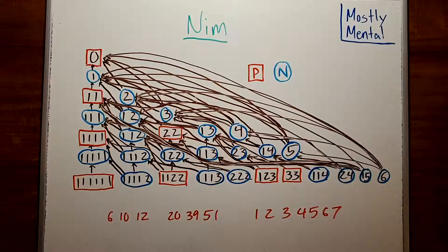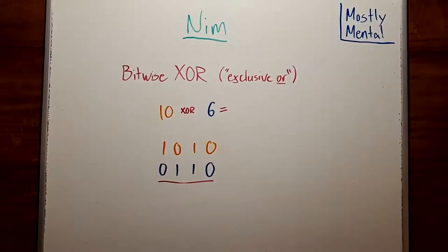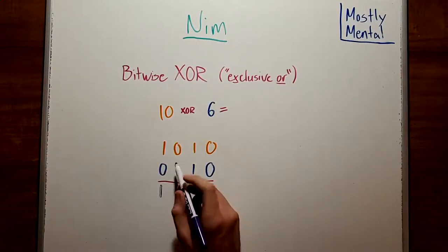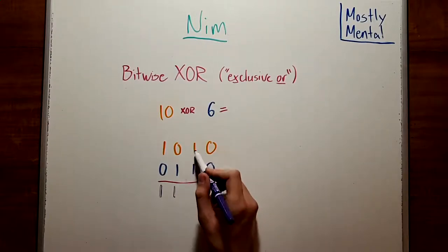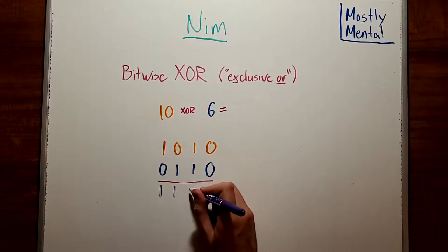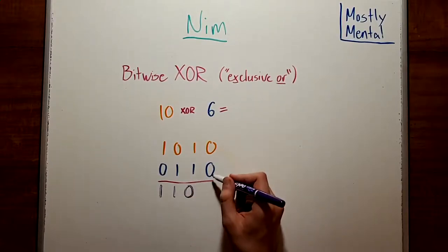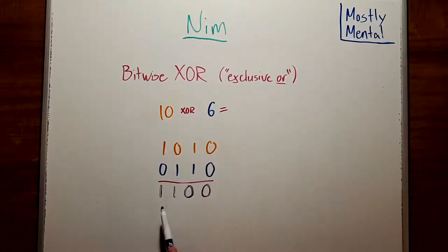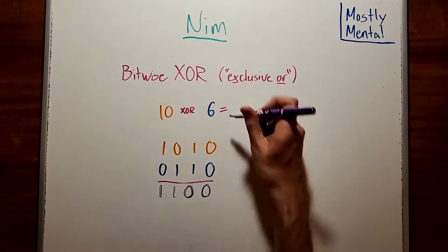If you've never seen it before, Bitwise XOR is an operation that takes two numbers in binary, and in each column counts whether they're an even or an odd number of ones. So, for example, to get 10 XOR 6, we first write each number in binary, and then look at the columns one at a time. This first column has one one in it, and one is odd, so the total is one. And the same for the second column. In this column, we have two ones, and two is even, so our total is zero. And this last column has no ones, and zero is even, so the total is also zero. So, 10 XOR 6 is 1100, which, in decimal, is 12.